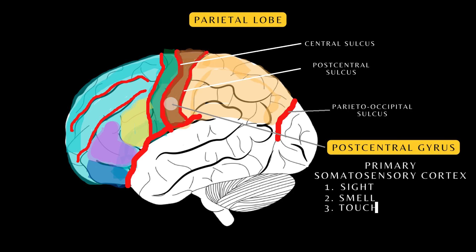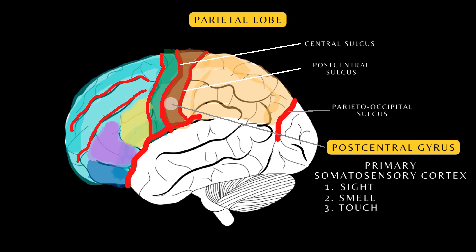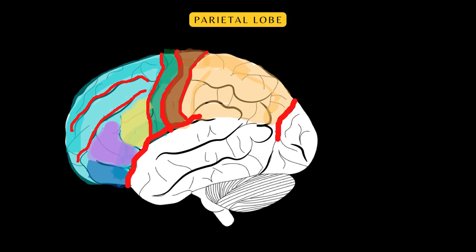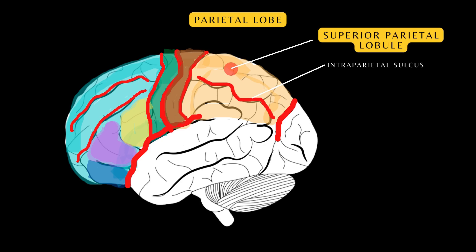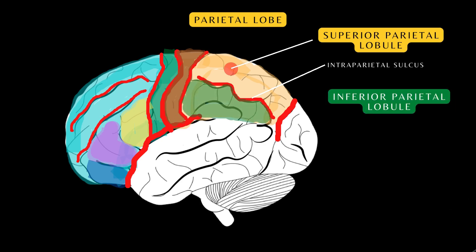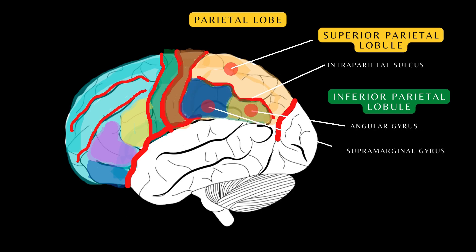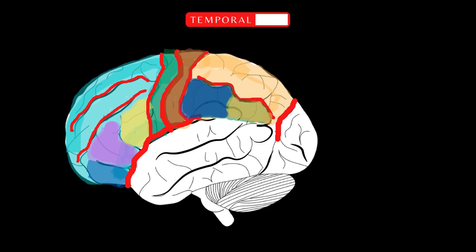Both the central and postcentral sulci give rise to the postcentral gyrus, which is the primary somatosensory cortex of the cerebrum, responsible for processing and integration of sensory input from all parts of the body. The parietal lobe is divided by the intraparietal sulcus into two smaller regions: the superior and inferior parietal lobules. The inferior parietal lobule is further divided into the supramarginal gyrus and the angular gyrus.